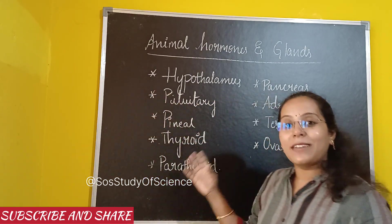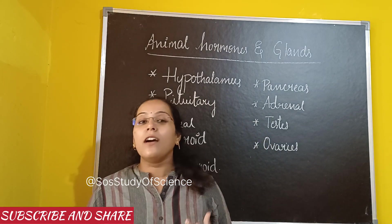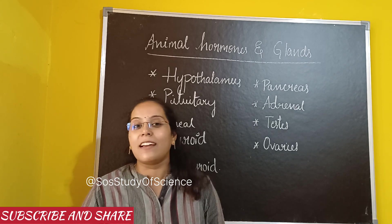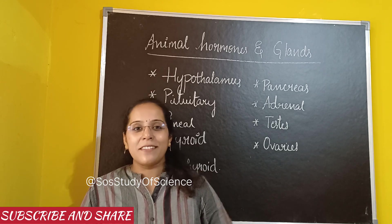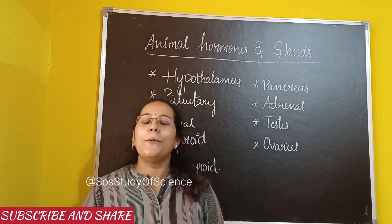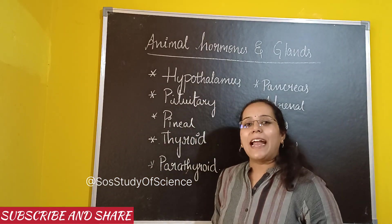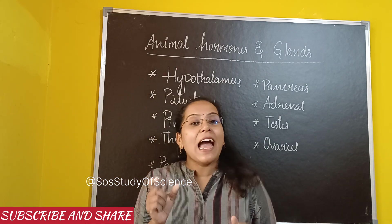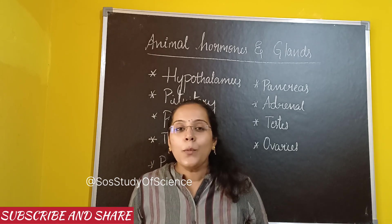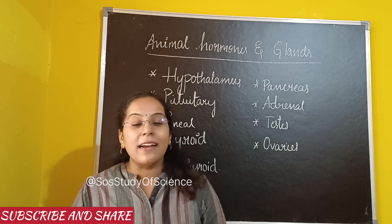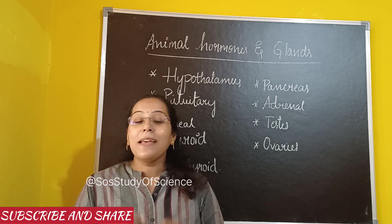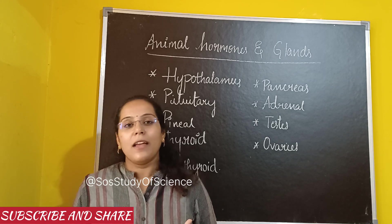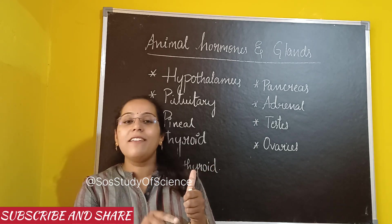Before explaining about these glands, let's summarize what a gland is and what hormones mean. A gland is an organ that basically secretes hormones. What are hormones? Hormones are nothing but chemical substances, or we can also call them chemical messengers. So a gland is an organ which releases hormones, and a hormone is a chemical substance secreted or released by the gland.